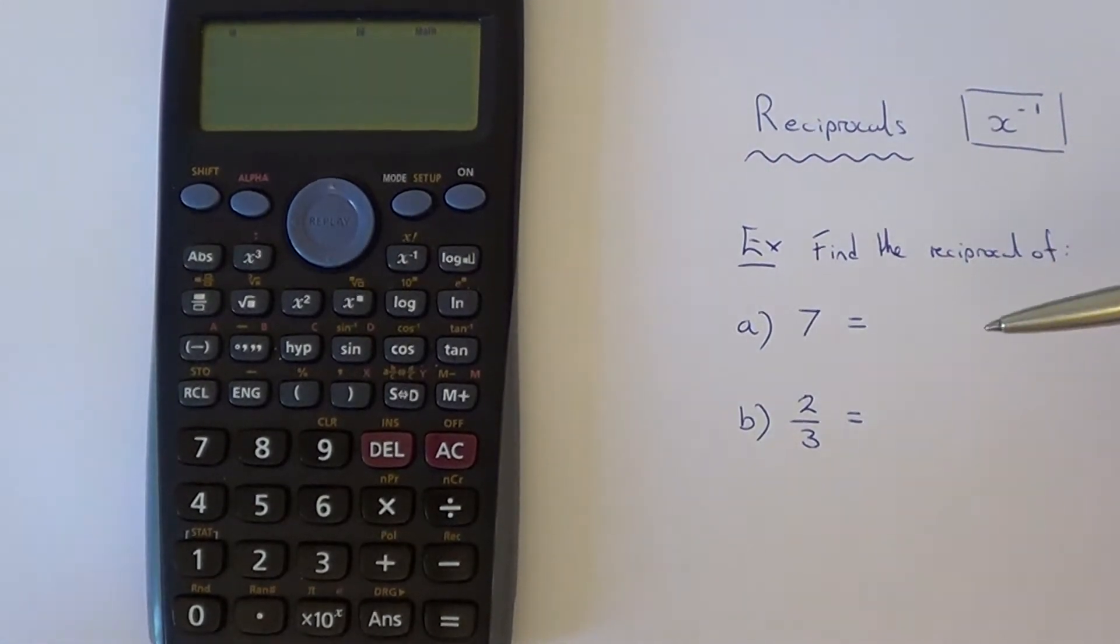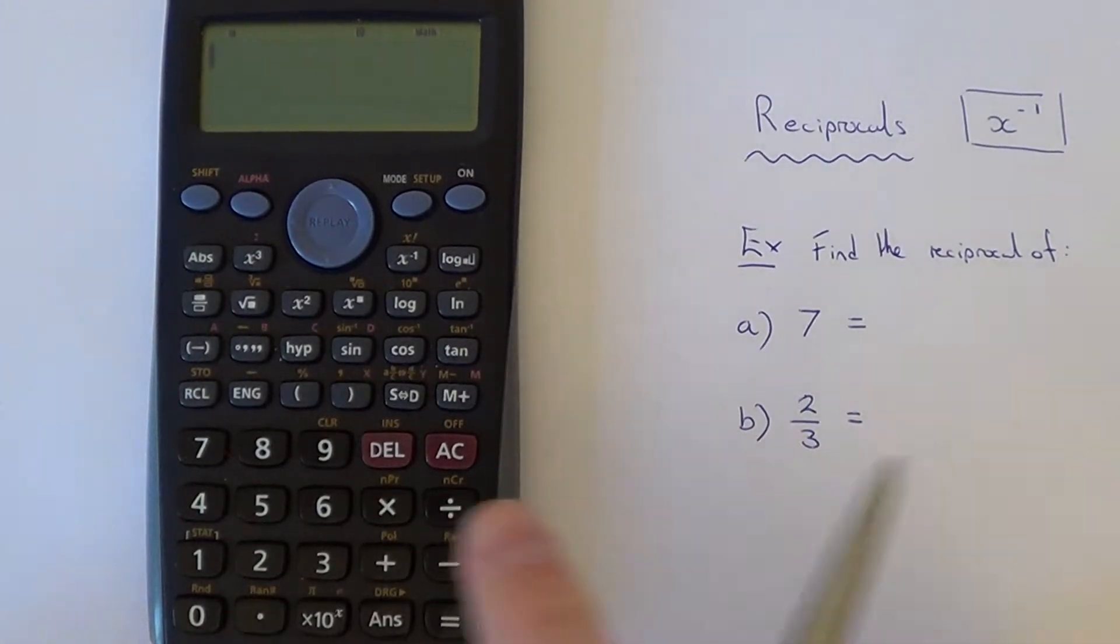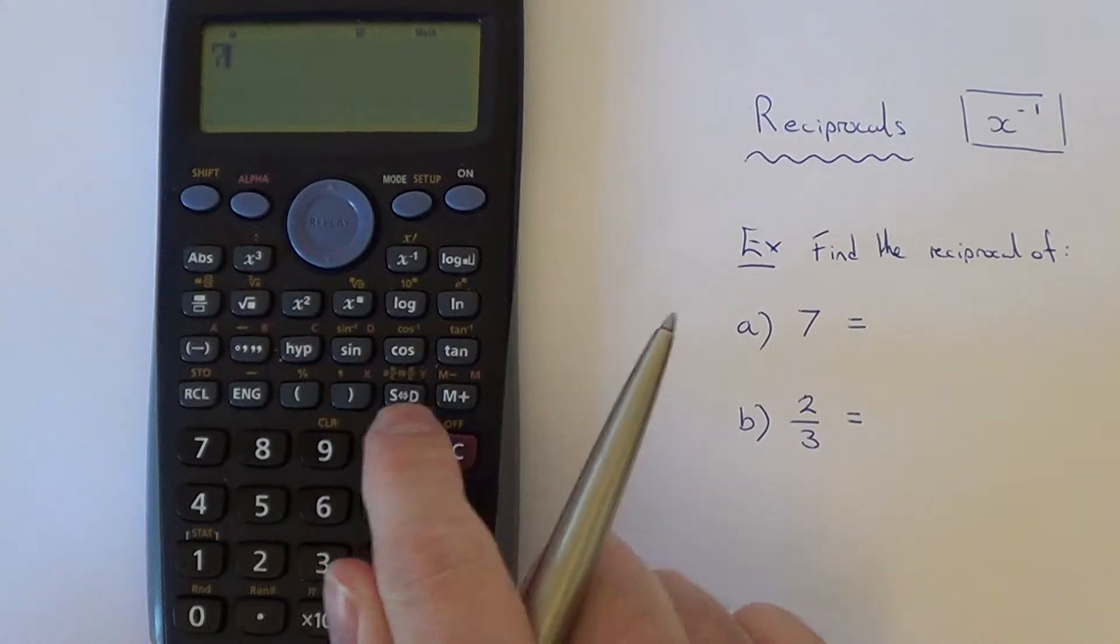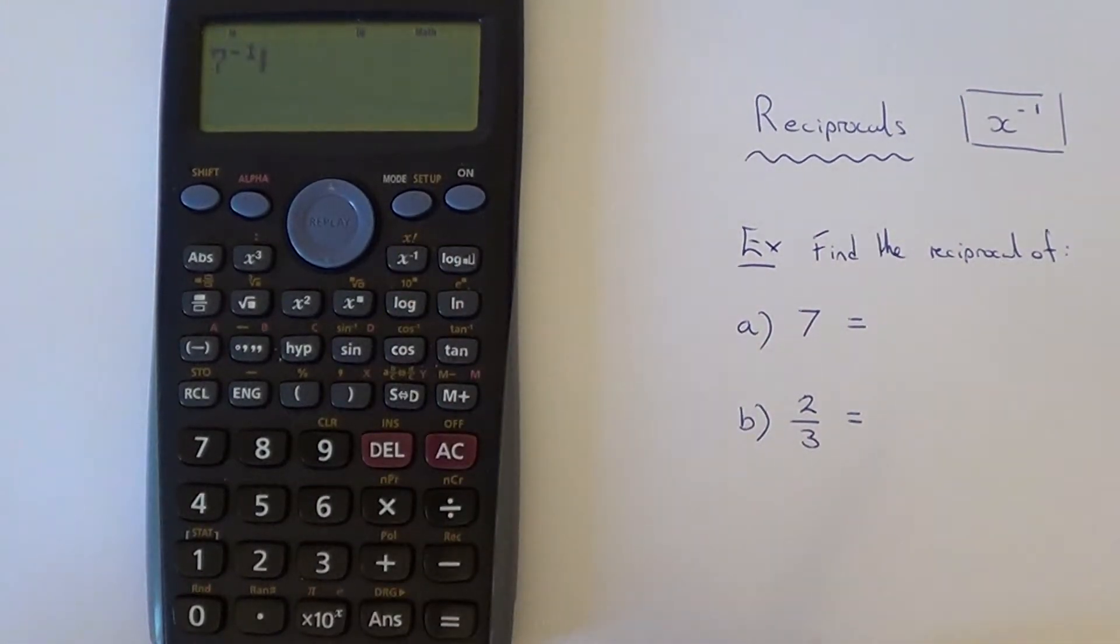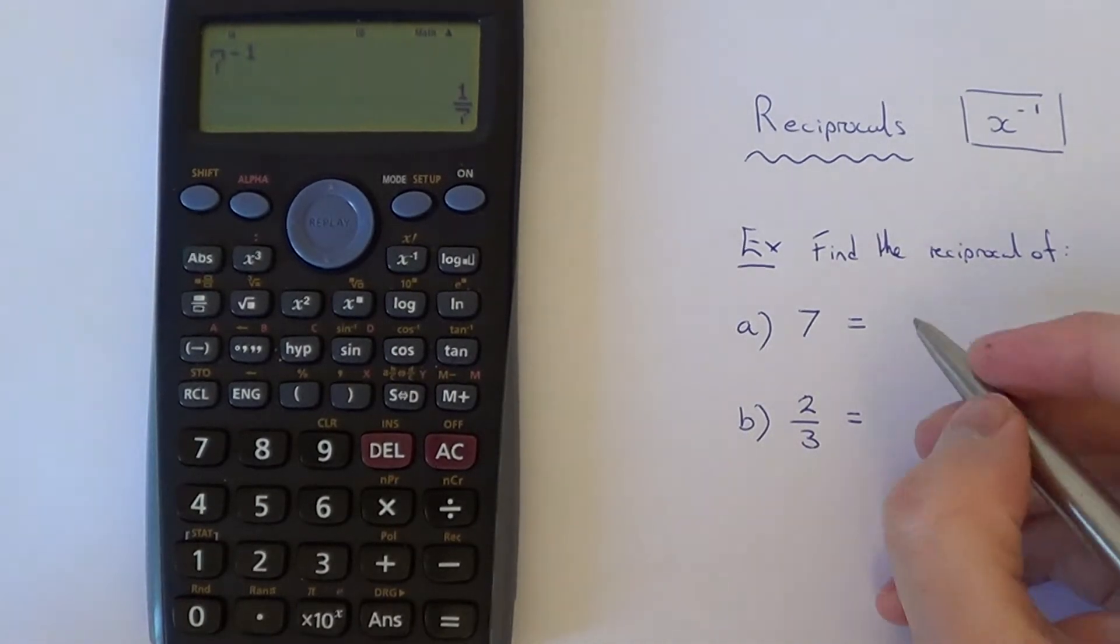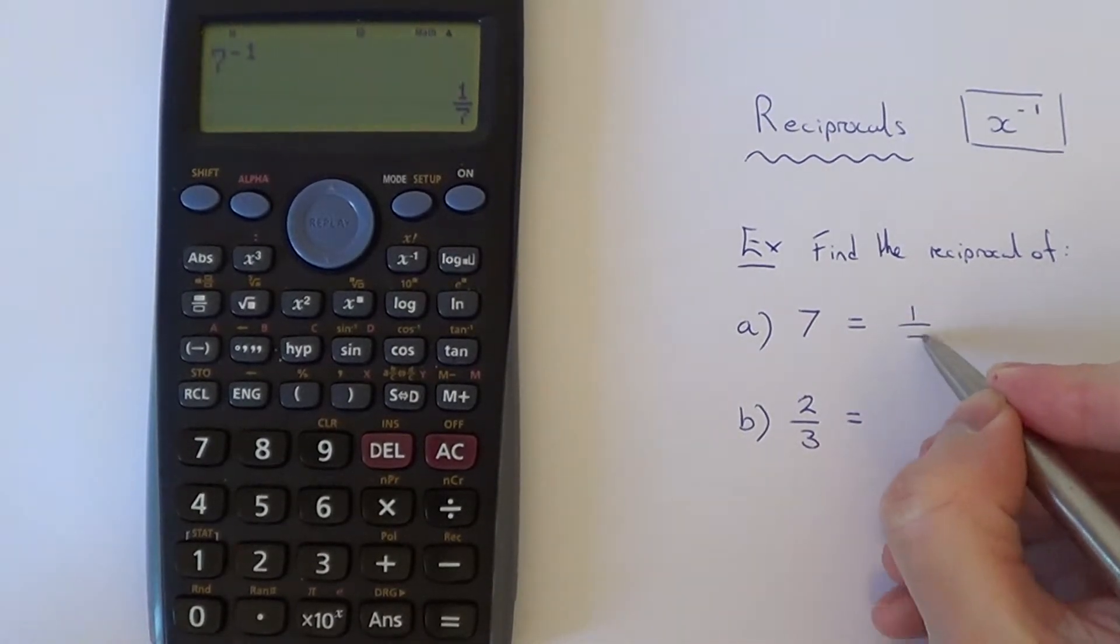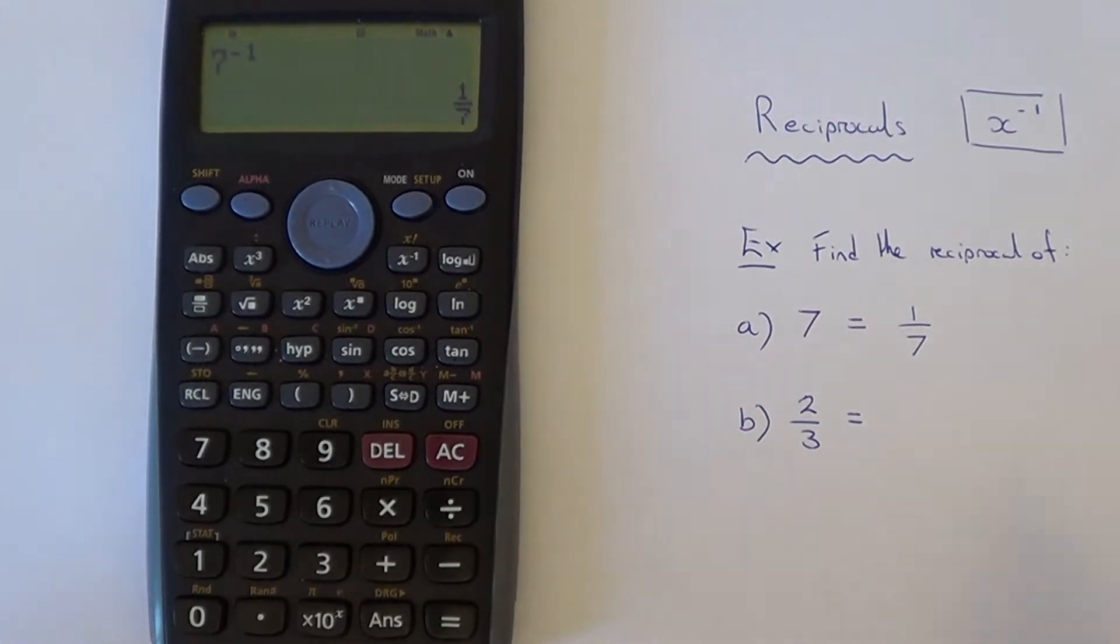Okay, so let's do a couple of examples. The first one is to find the reciprocal of 7. If we type 7 in and then hit the reciprocal key, hit your equals and we get the answer of 1/7. Let's delete that one off.